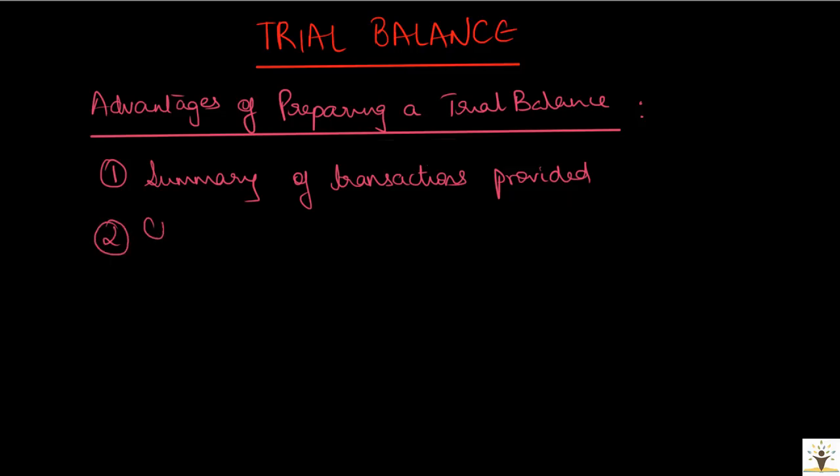Second, it helps to check the arithmetical accuracy of the accounting records. For example, let's say when balancing our toy store account, we incorrectly balanced it as $4,300 instead of $3,300. Then when the trial balance is prepared, the two sides will not agree and this gives the hint that an error has been made.